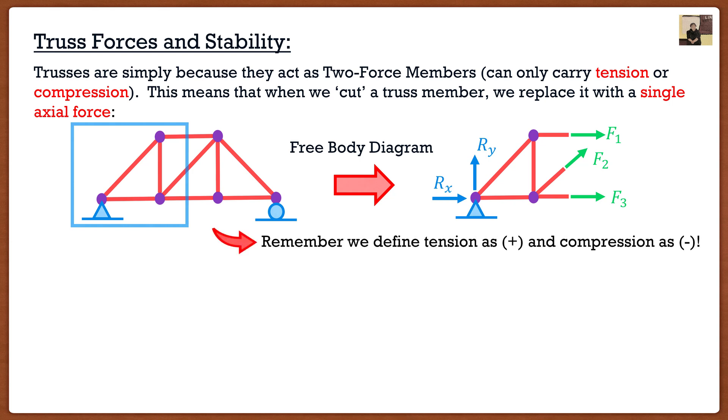Remember that we define tension as positive and compression as negative. So remember before in particle equilibrium, I always said assume tension. This means that our force is pointing away from our joint. And if we do the math and we get our force as negative, it means that it's actually in compression. But if we do the math and we get our answer as positive, it means it's actually in tension, which is good.